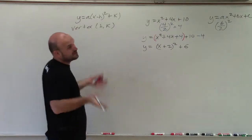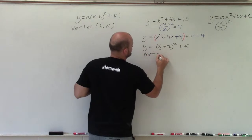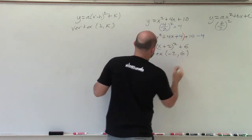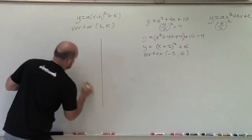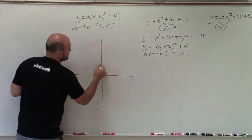If a is 1, then we know our graph is going to open up. So here, we can determine that my vertex is at (-2, 6). So now to graph this, all I'm going to do is go over negative 2, up 6: 1, 2, 3, 4, 5, 6.